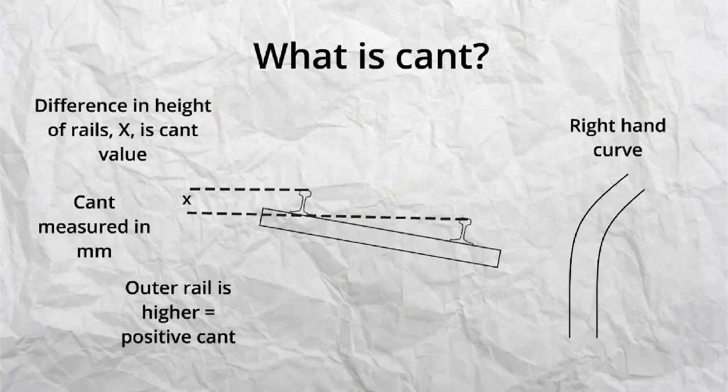When the outside rail on a curve is higher, as in our example, this is known as positive cant. If the outer rail is the lower of the two rails, this would be negative cant.